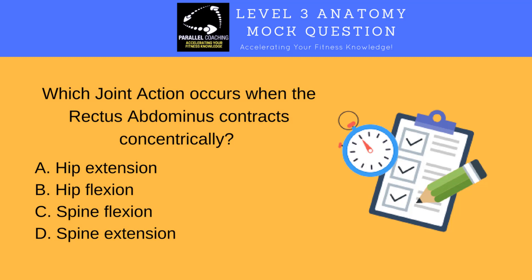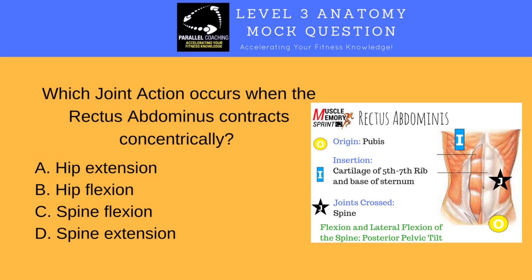The answer is C — spine flexion. That's what happens when the rectus abdominis contracts concentrically. To break it down: first, get a clear image in your mind of the rectus abdominis — where it is and the line of fiber — and think about what action would happen if that line of fiber got shorter and pulled either end towards each other. Remember, concentric contraction means the muscle fiber is getting shorter; if it asked for eccentric it would be getting longer. In this case the answer is spine flexion. If you get confused by any of these, please pop your questions in the comments box below.